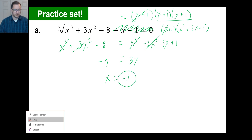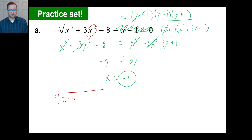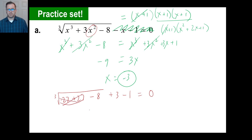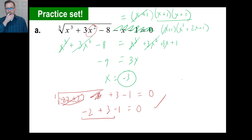Let's check: negative 3 times negative 3 is positive 9. Positive 3 times 9 is 27, plus 27 minus 8 — well, the cube root of negative 8 is negative 2. So negative 2 plus 3 minus 1 equals 0. There's our 1 minus 1 equals 0. It worked.